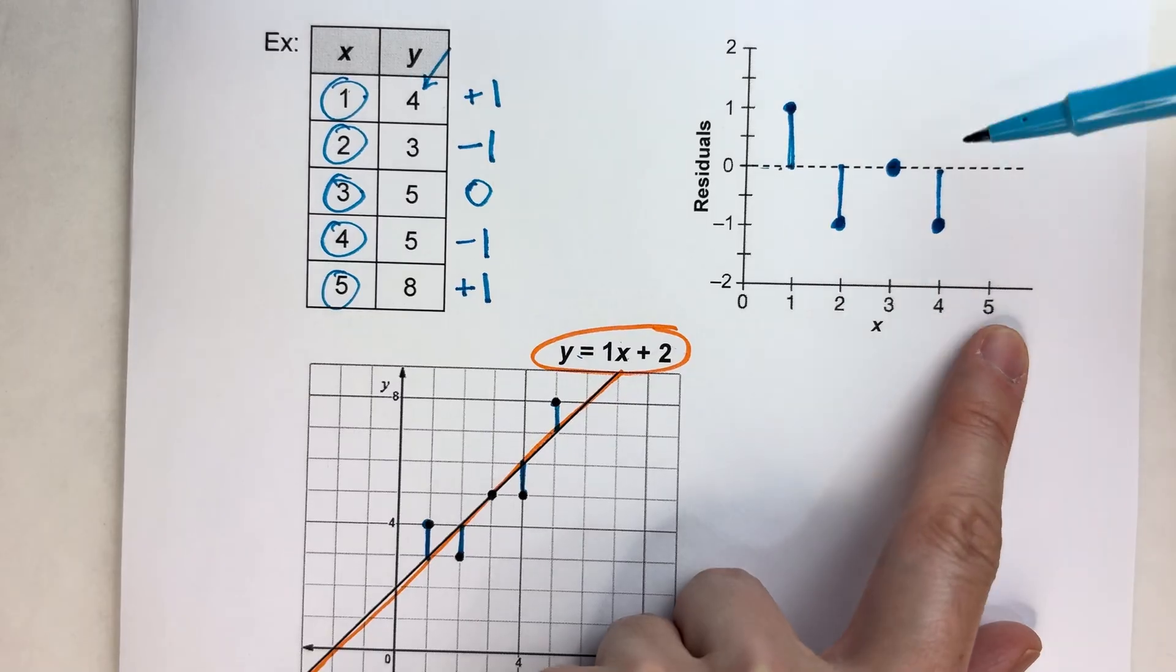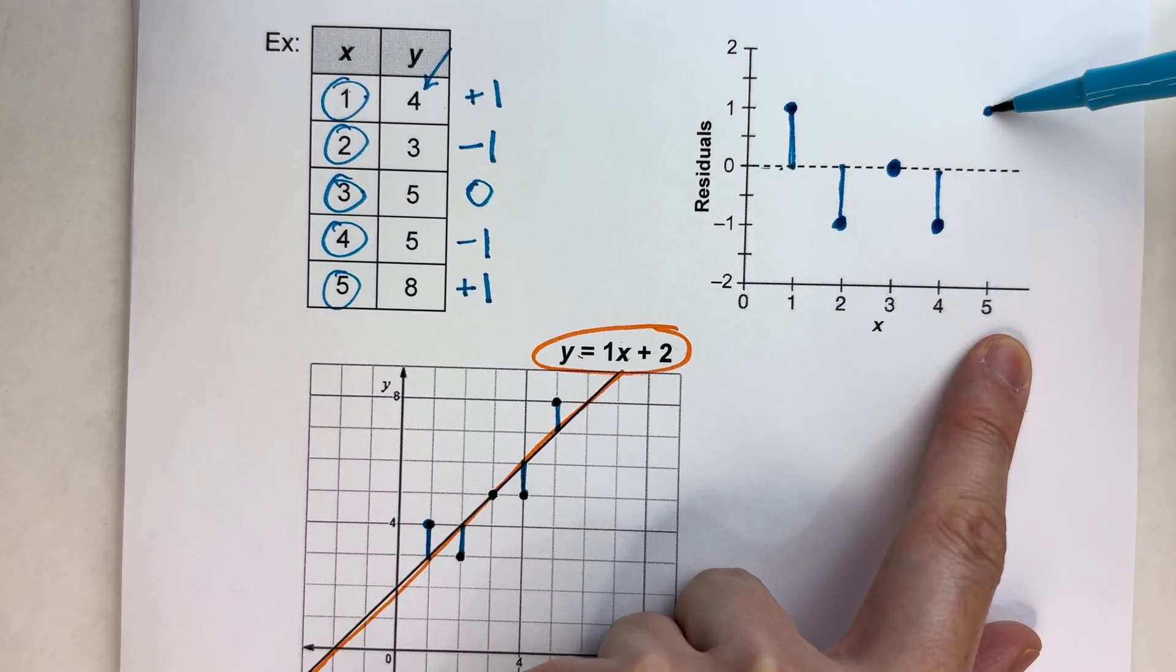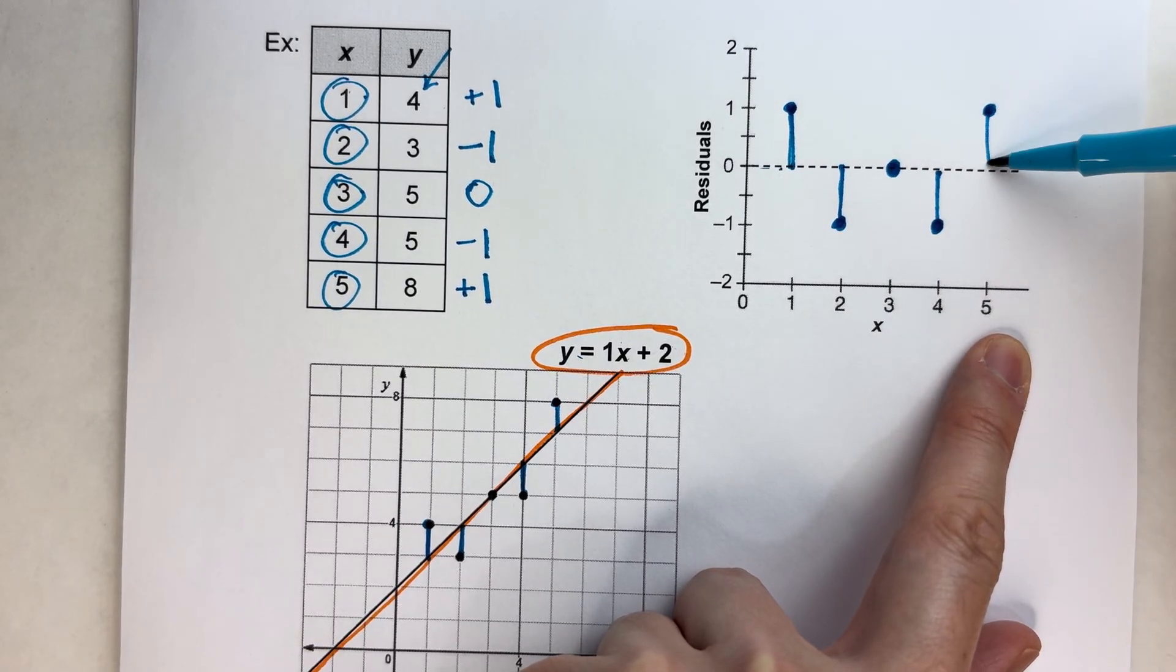And then for 5, it's positive 1. 5, positive 1. There we go.